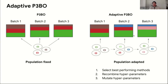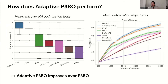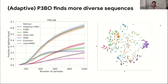There's also an adaptive version of P3BO that recombines and mutates hyperparameters across rounds, eking out a tiny bit more performance. More importantly, both adaptive and normal P3BO allow us to find more diverse sequences. Showing a PCA of the best sequences found by each method, those found by evolution or single-mutant walkers are clustered, whereas those found by P3BO are spread all over the plot — reflecting their diversity — which we thought was quite exciting.